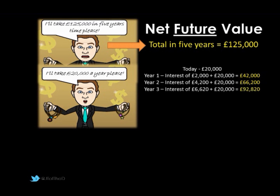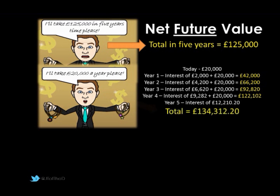Year three continues in the same vein, as does year four, and finally we get to year five. In year five we don't receive a further instalment of £20,000, but we have earned interest of £12,210.20 from the £122,102 we had at the end of year four. So our total at the end of five years is £134,312.20.